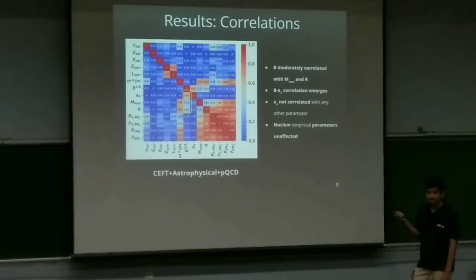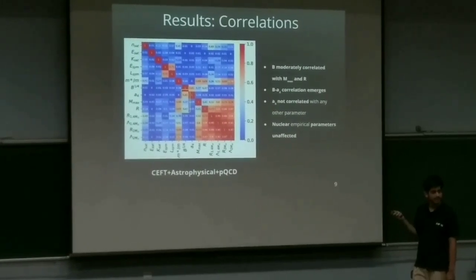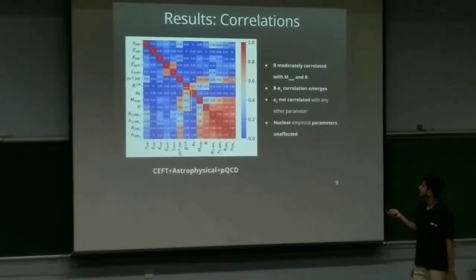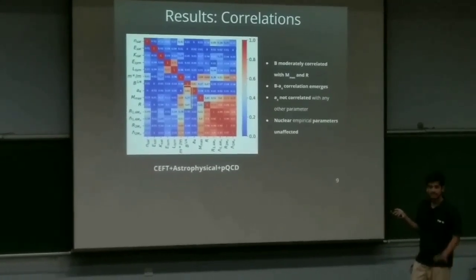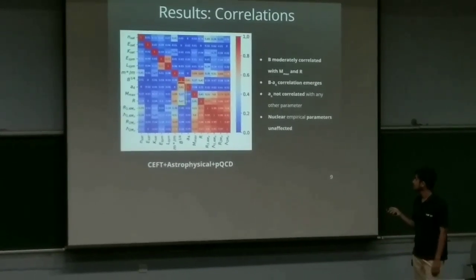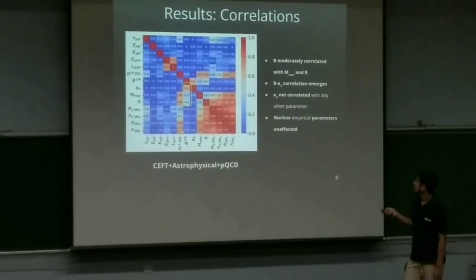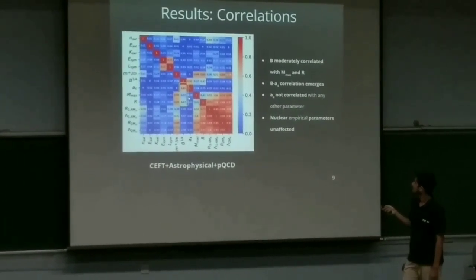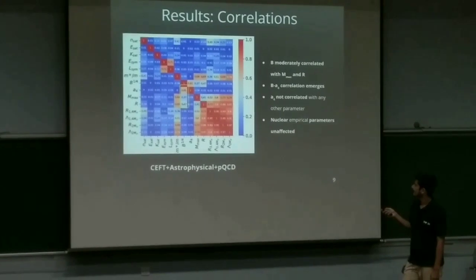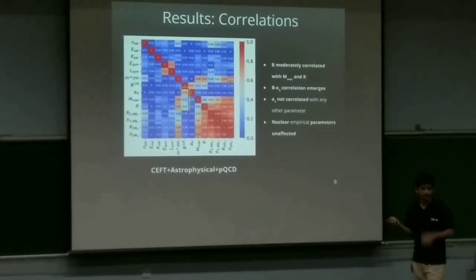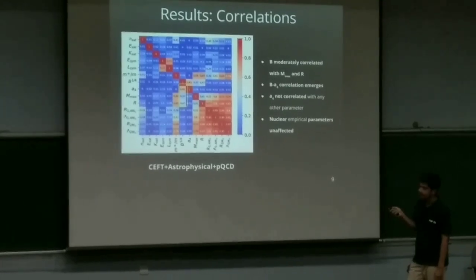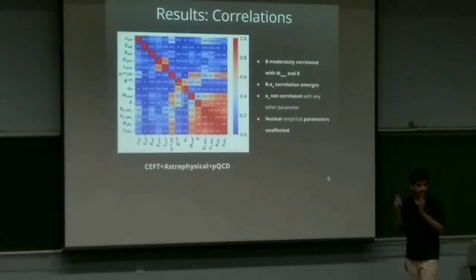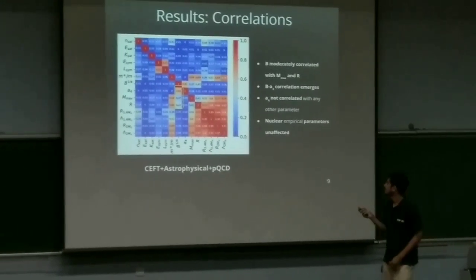Another new thing we have is the pQCD constraints. When we add the perturbative QCD constraints, most of the correlations more or less remain unchanged. We see B is moderately correlated with the maximum mass and the corresponding radius for that configuration. We also see that the correlation between B and a4 emerges. So these two parameters within the quark sector itself, they turn out to be correlated. And a4 doesn't seem to be correlated with any of the other parameters.